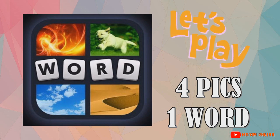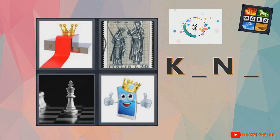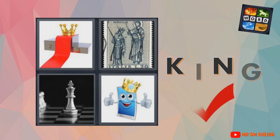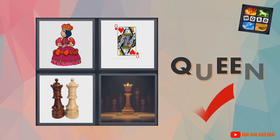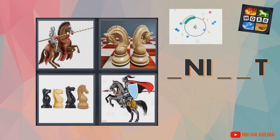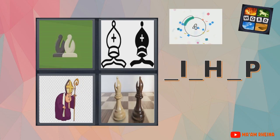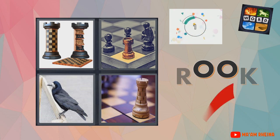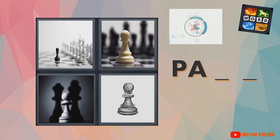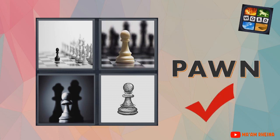Before we proceed, let us play a short game — guess the word on each item. You have 5 seconds to answer. The answers are: King, Queen, Knight, Bishop, Rook, and Pawn. Great job!